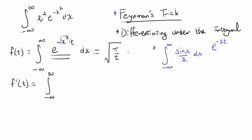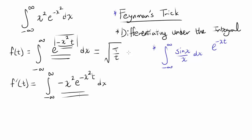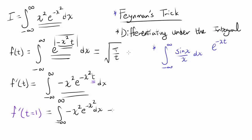We differentiate with respect to t, and because we have e to the negative x squared t, we use the chain rule and multiply by the derivative of negative x squared t with respect to t, which is simply negative x squared. Notice that this integral looks very close to the integral given to us: the integral from negative infinity to infinity of x squared e to the negative x squared. In fact, when t equals 1, f prime evaluated at t equals 1 gives us the integral we wish to find, times negative 1 because of the negative sign.